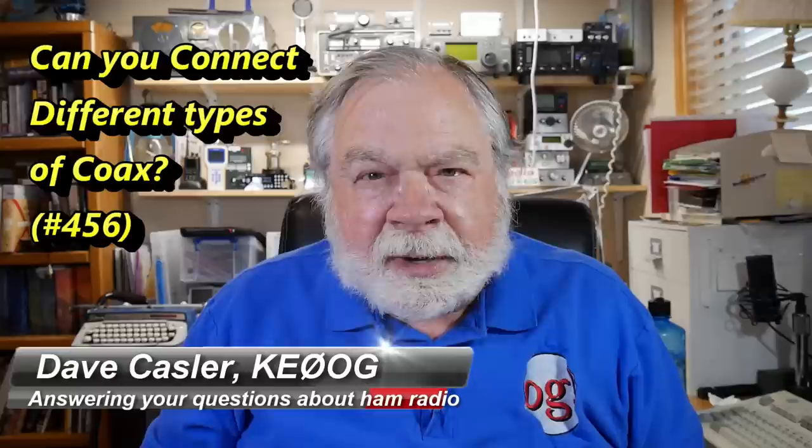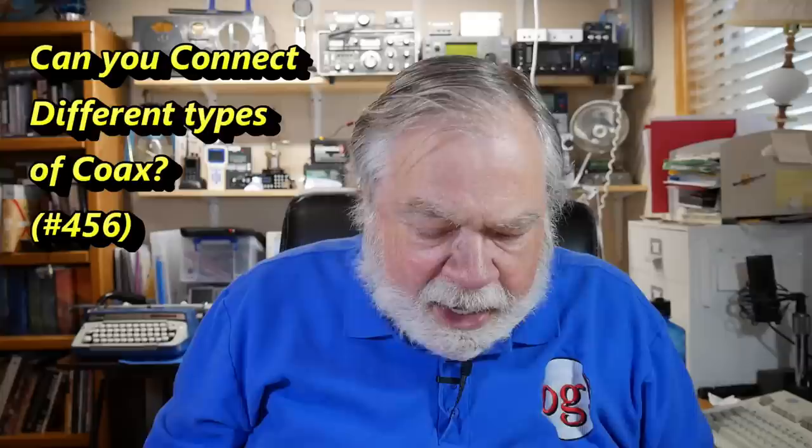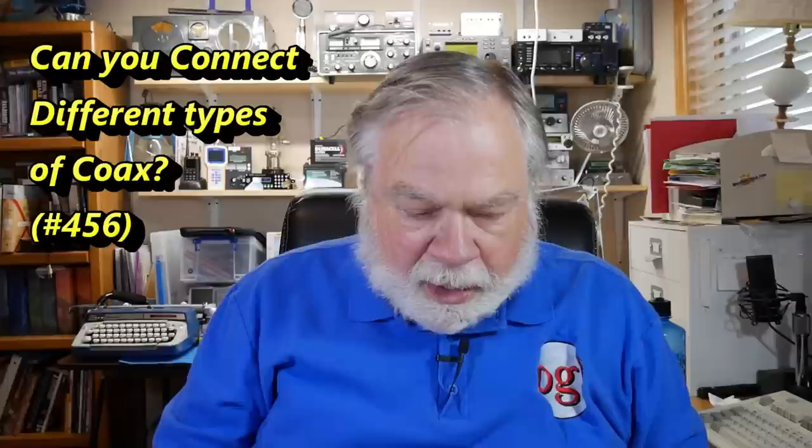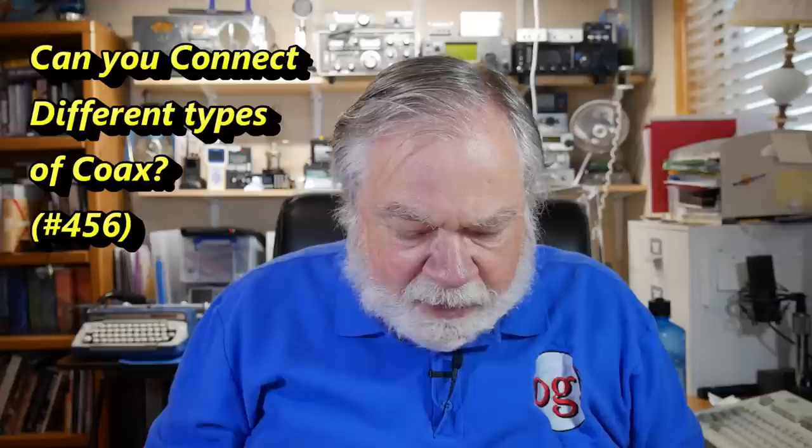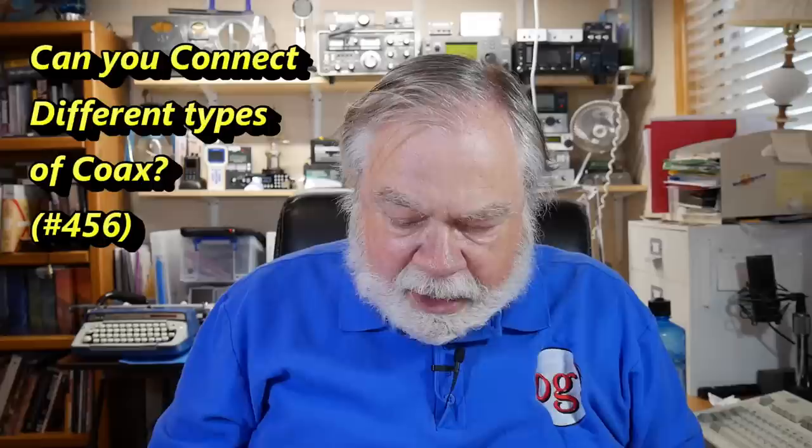Today's question comes from Troy Lerner, KF0AFQ. He has a very simple question that made me stop and think before I said this would work. He says, hi Dave, I understand that different coax types have different losses. Is it okay to connect dramatically different loss types of coax to make one long piece? For example, can I connect 25 feet of Heliax to 25 feet of RG8X to 25 feet of LMR400 to make a 75 foot run? 73 Troy.